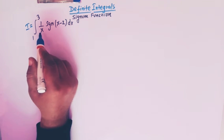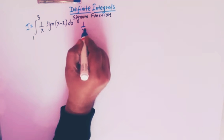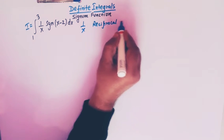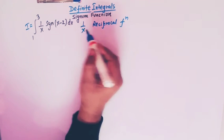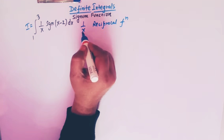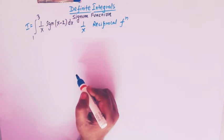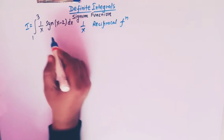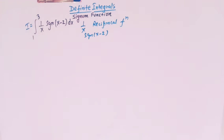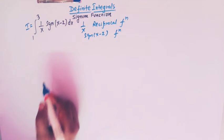The integrand is a combination of a reciprocal function and a signum function. 1 over x is our reciprocal function — we can also call it a rational function, because the numerator is 1 and the denominator is x, and both are polynomials. And signum of x minus 2 is our signum function.